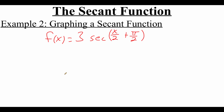Just like changing the a, b, c, and d values of a cosine graph adjusts its picture, the same holds true for secant. For the next example, f(x) = 3·sec(x/2 + π/2). We're going to pretend it says cosine for a moment and do all of our normal cosine steps.